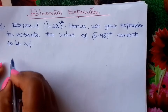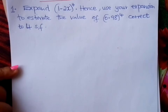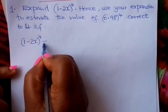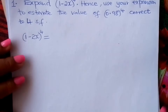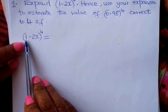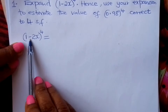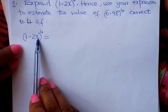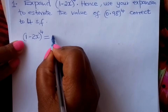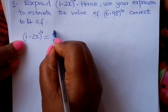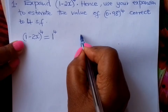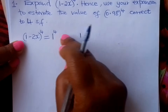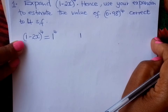Binomial expansion. The first thing is to expand the binomial: (1 minus 2x) raised to power 4. The first term is 1 and the second term is negative 2x. You first deal with the first term — 1 raised to the highest power, which is 4. Then you reduce the power by 1 all the way down to power 0 as you move to the right.